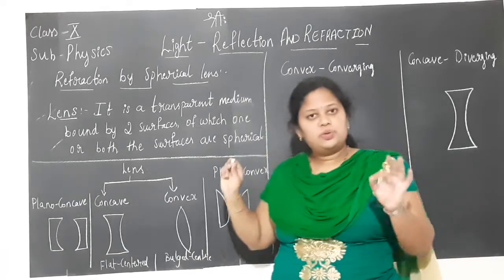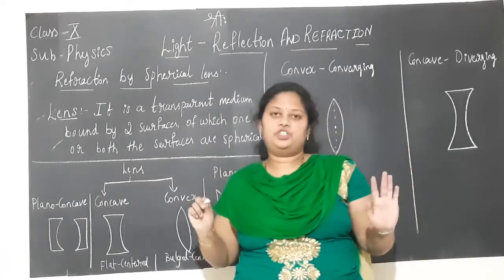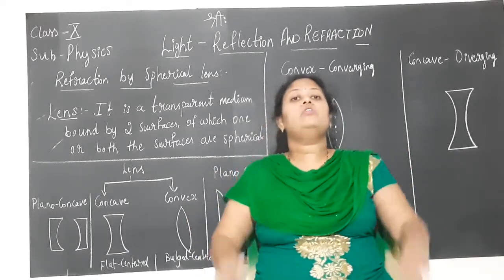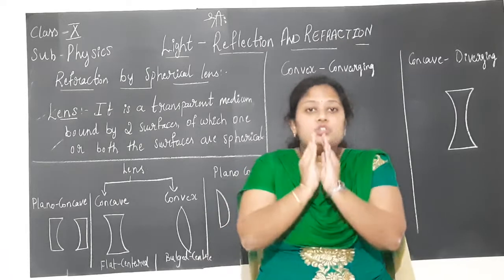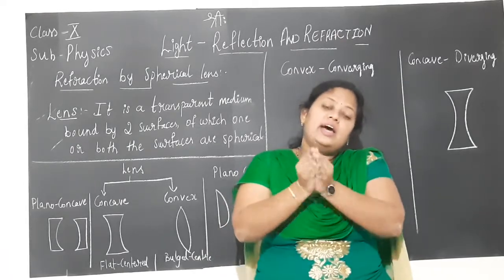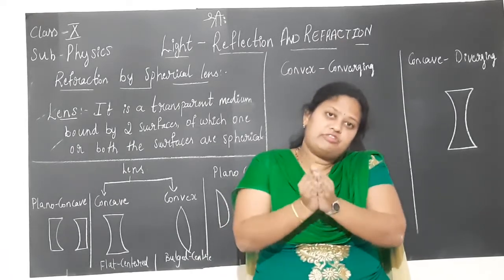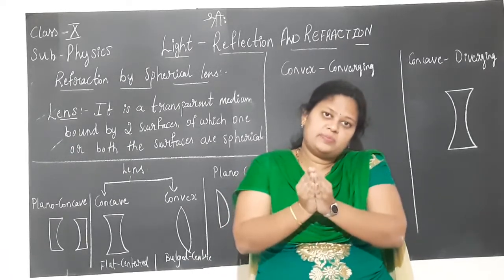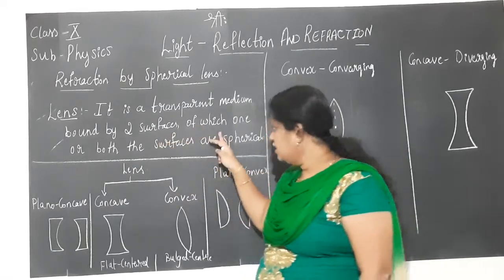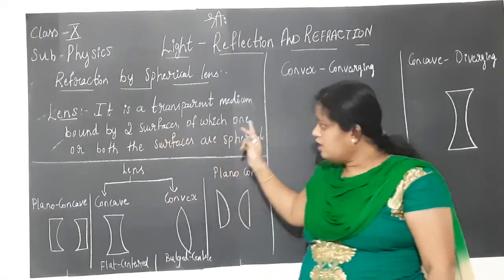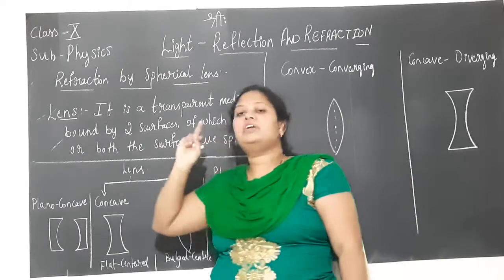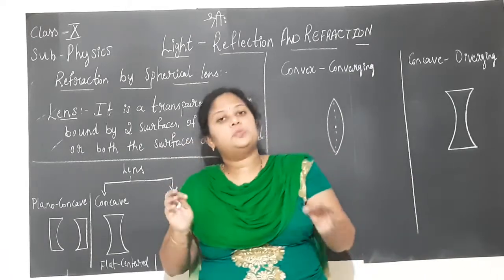So lens is a transparent medium — that is the first point. Second point is it has two surfaces, of which one or both the surfaces are spherical.